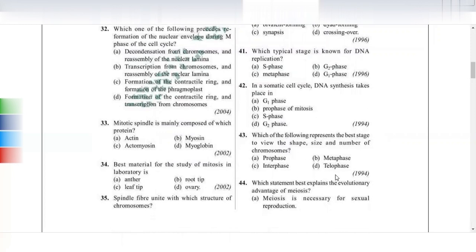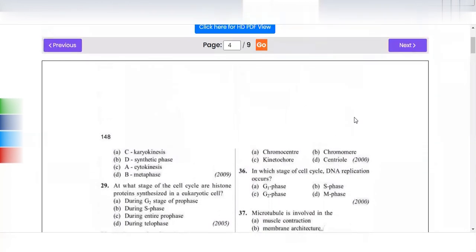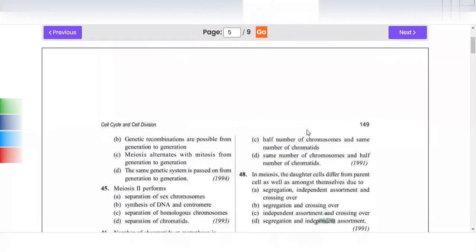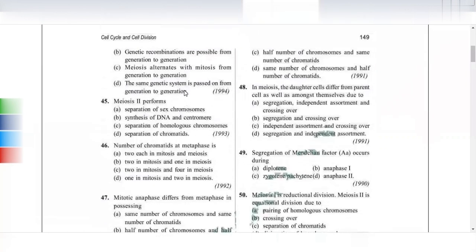Which treatment best explains the evolutionary advantage of meiosis? Meiosis is necessary for sexual reproduction. The evolutionary advantage is genetic recombination possible for generations to generations. Not alternating with mitosis or same genetic system. Option B supports this - genetic recombination gives us variation across generations.